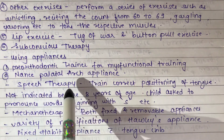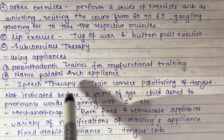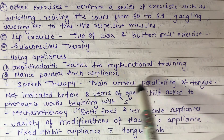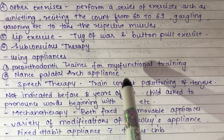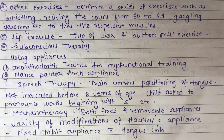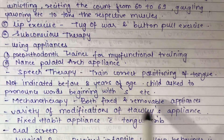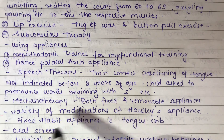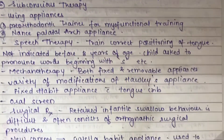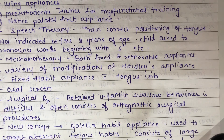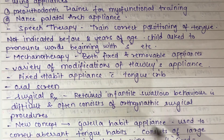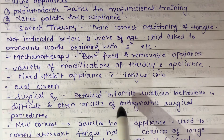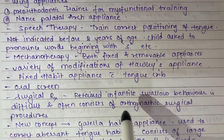Speech therapy is indicated when the patient has speech problems; training correct positioning of the tongue is not indicated before eight years of age as it is self-correcting. The child is asked to pronounce words beginning with 'S.' Mechanical therapy includes Hawley's appliance, tongue crib, and oral screen. Surgical treatment — including orthognathic surgical procedures — is the last option for cases of retained infantile swallow behavior that cannot be corrected by other means.